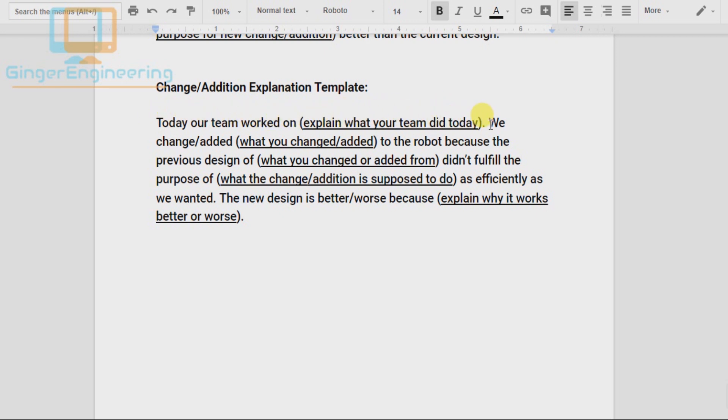we changed or added, and then write down what you changed or added to the robot because. And then explain why you added that or changed the robot, and explain how it's better than the previous design. Then you'll write down the materials you used and the procedure you took.